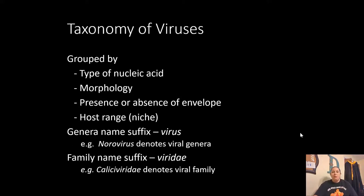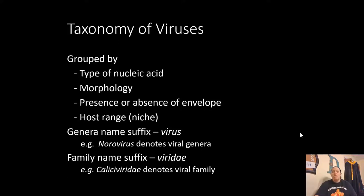When we look at the taxonomy of viruses, they are grouped by the type of nucleic acid — DNA or RNA — their morphology and shape, whether there is an envelope, and their host range: what kind of host they infect, whether bacteria, plants, or certain animals. Their genus name suffix includes 'virus,' such as norovirus, and their family name suffix is 'viridae,' such as Caliciviridae.